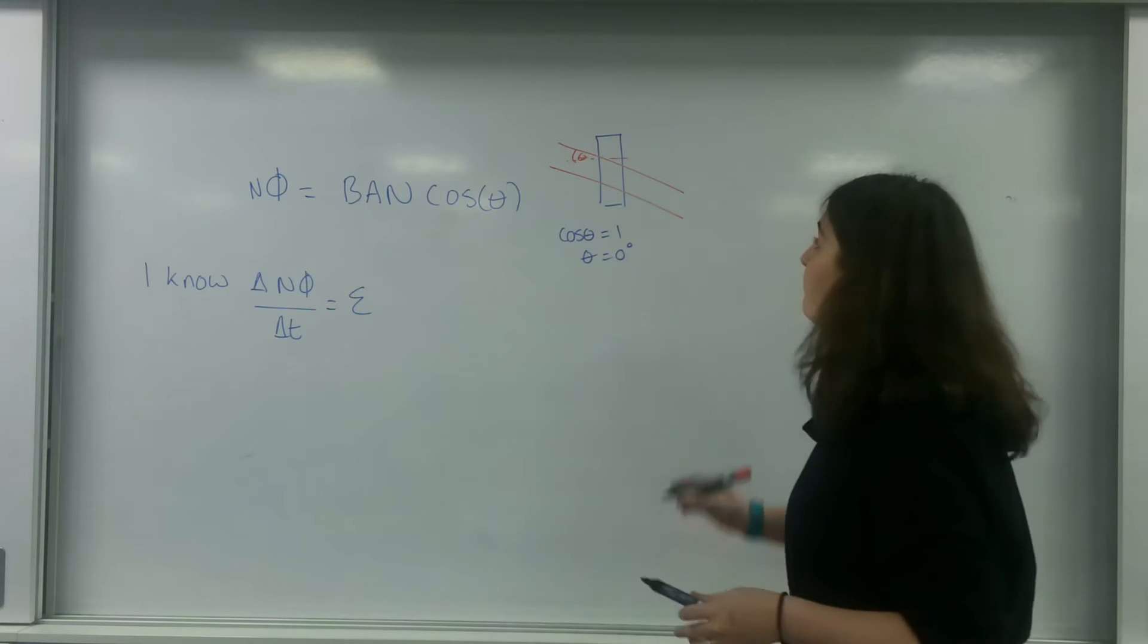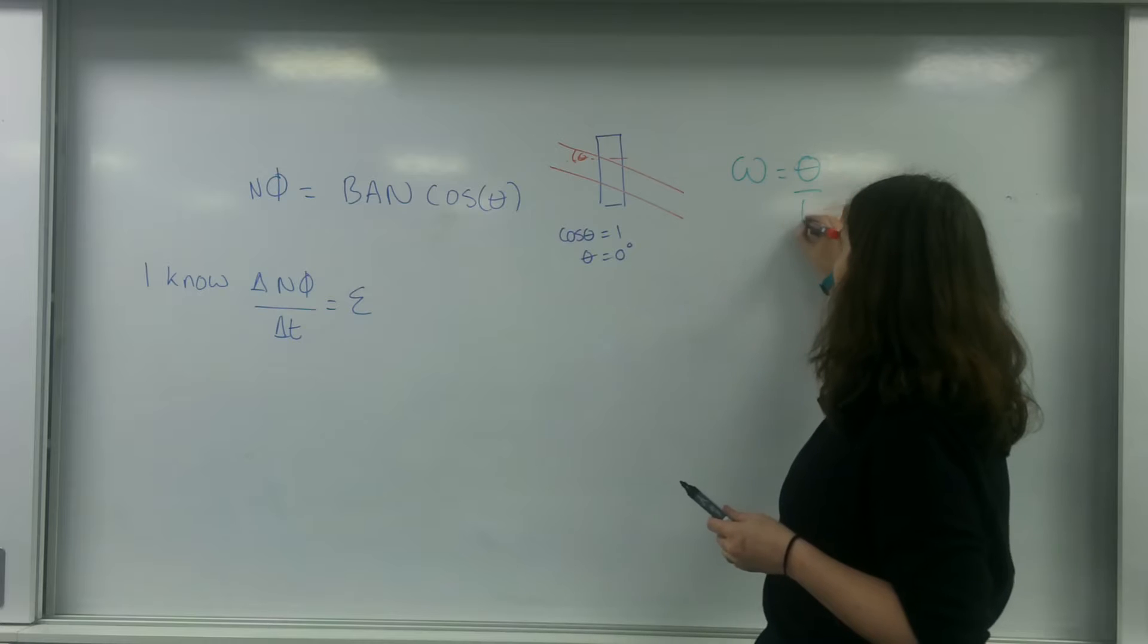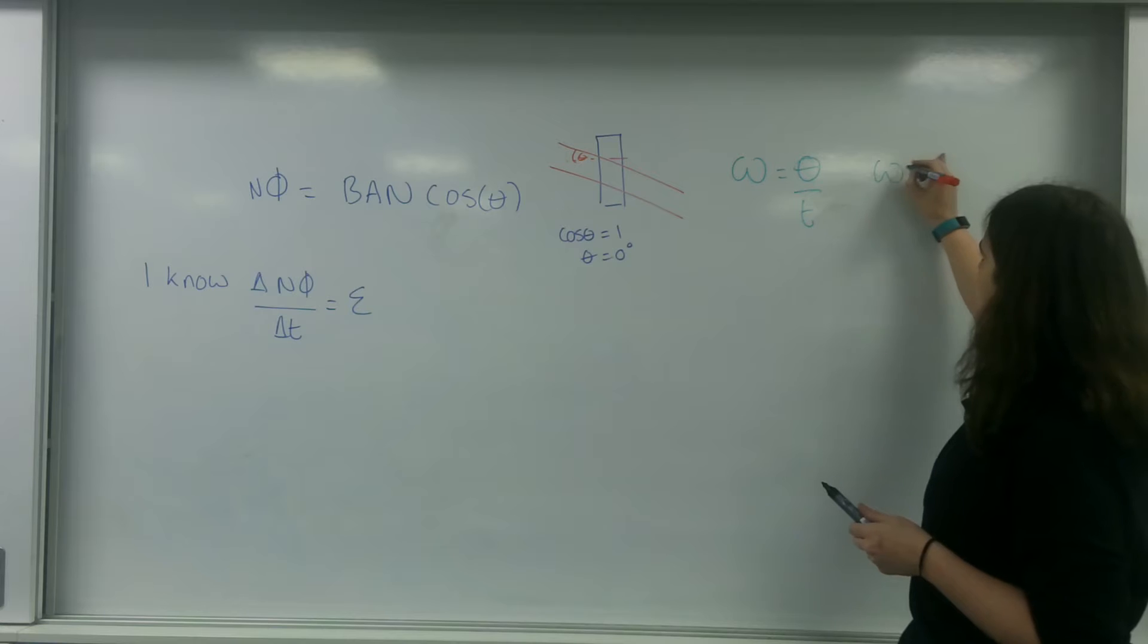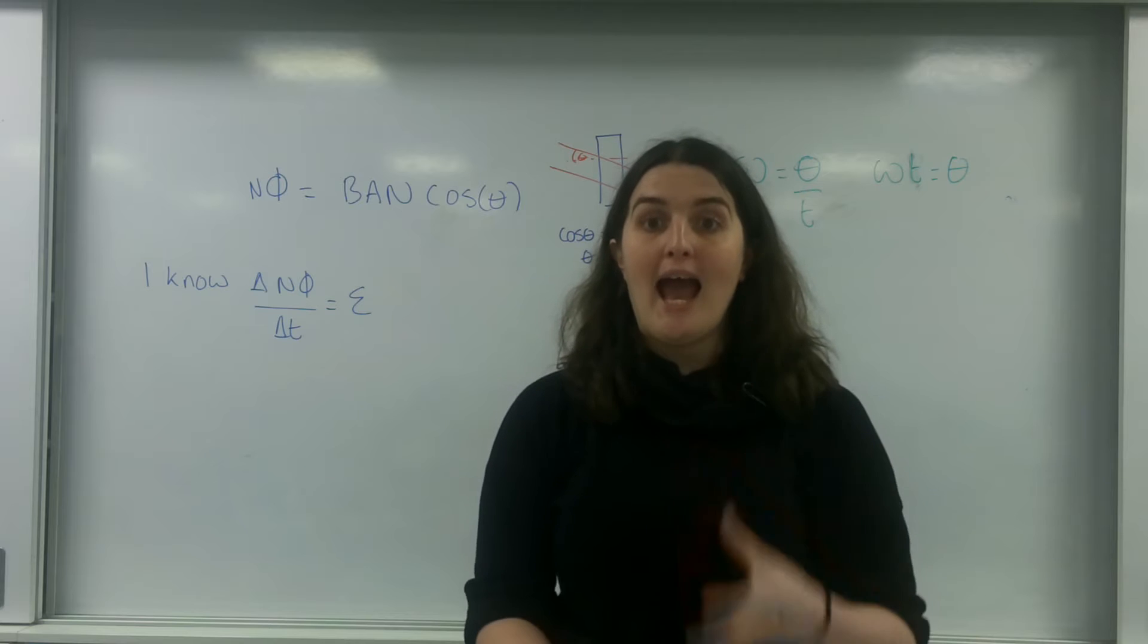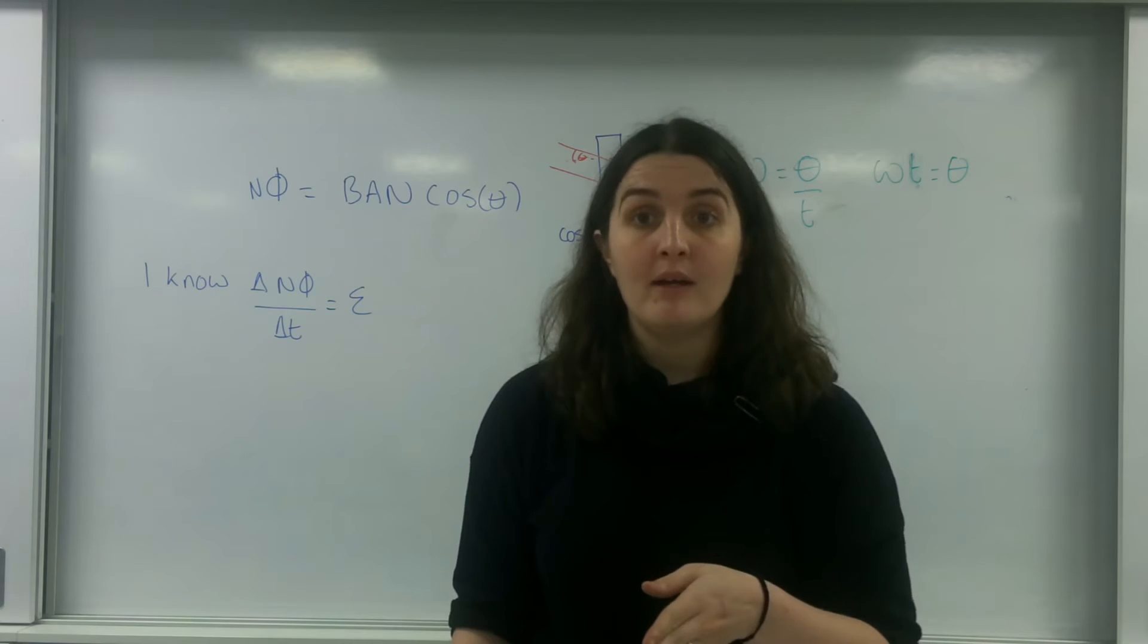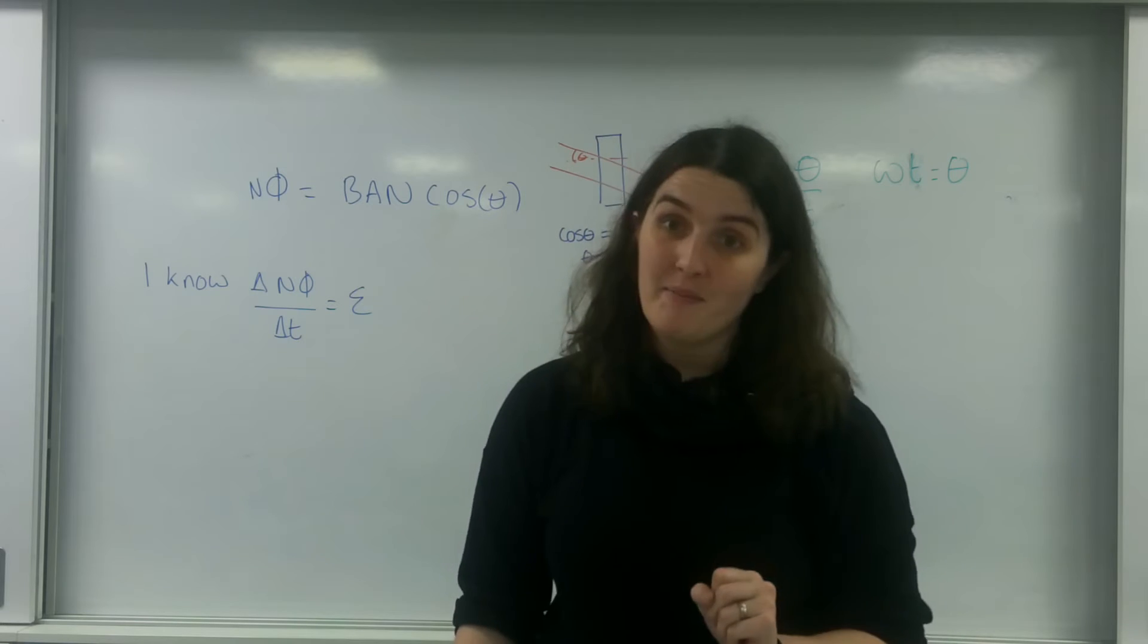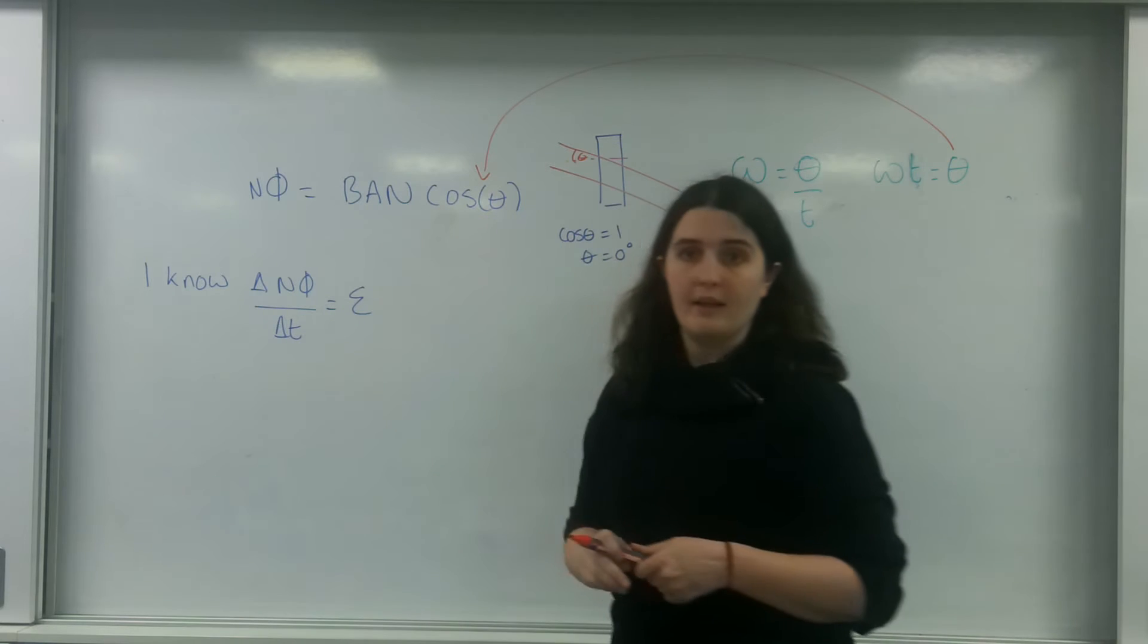What I need to do is try to find a way to relate this angle with the time that has been going around. I can do this by using circular motion. I know omega is the angle over the time, which means that omega times T is my angle. So what I can actually do is work out the angle that I am at any point in time by knowing its angular velocity and what time it's at. So I'm going to replace this into here.